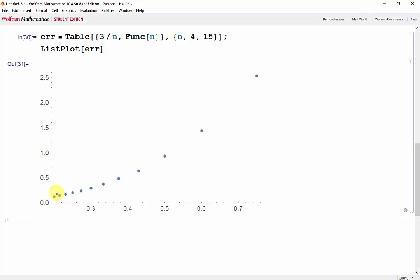This graph is showing us that increasing the step size also increases the error. Now let's try using the NonlinearModelFit function to see if it matches the expected relationship.